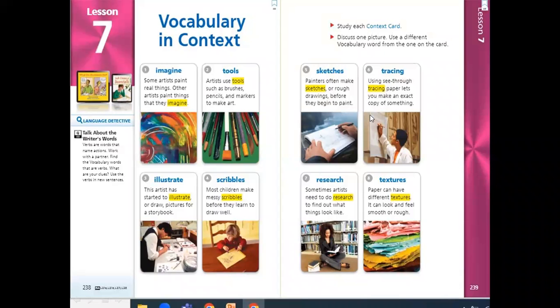Hello Grade 3, how are you? Let's start our lesson, Lesson 7, with the new vocabularies. The first word is imagine. Imagine some artists paint real things, other artists paint things that they imagine. So imagination is something from your mind, it's not real and it's not happening in real life at all, it's not a fact.